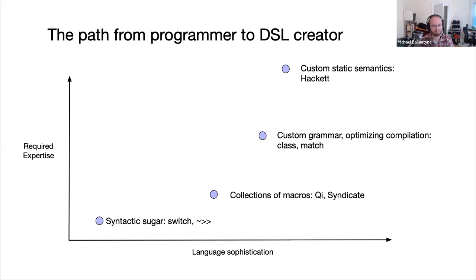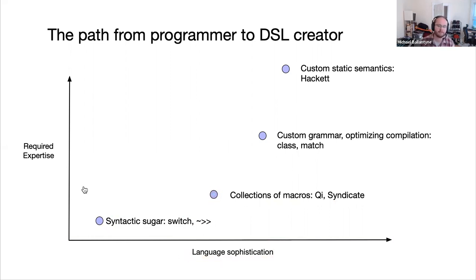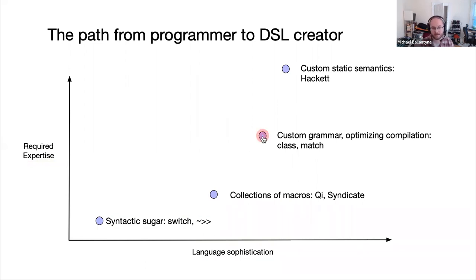There's a good story for building syntactic sugar like switch or threading, and even things like Chi or Syndicate, without knowing too much about the macro system. But as soon as you build something like class or match — with a custom grammar and optimizing compiler — you hit a cliff where you need deep knowledge of the macro system. For type systems, even fewer people know how to do that. Perhaps we can bring in ideas from language workbenches, which are all about letting you define custom grammars and static semantics via meta-languages that let you express those concepts succinctly and declaratively.